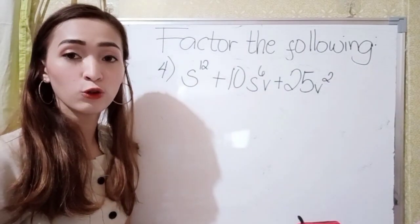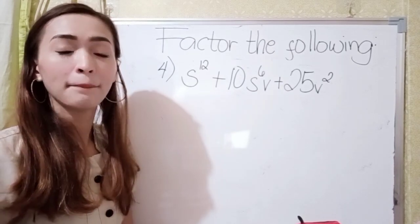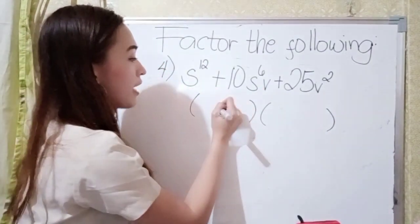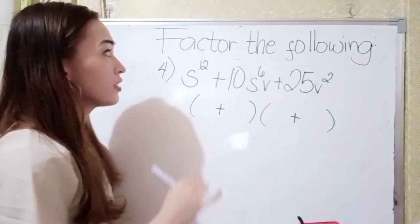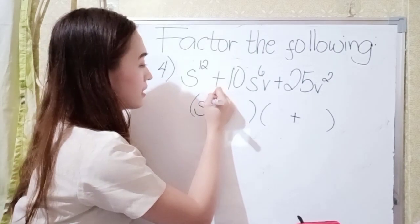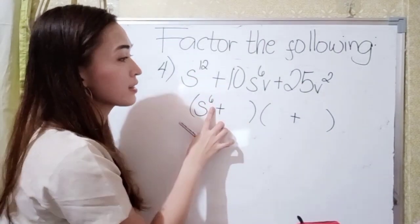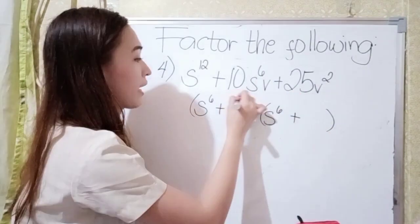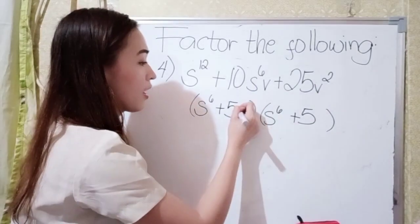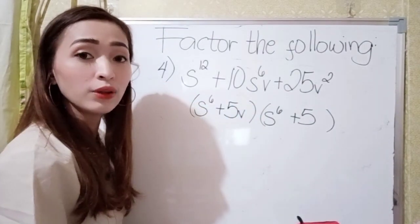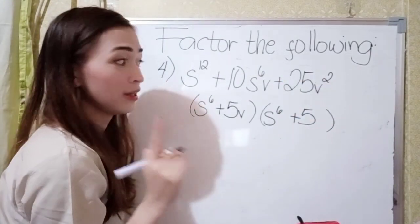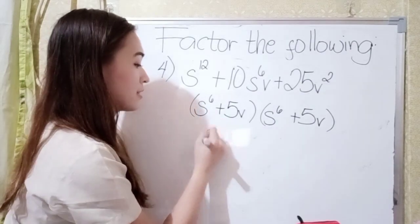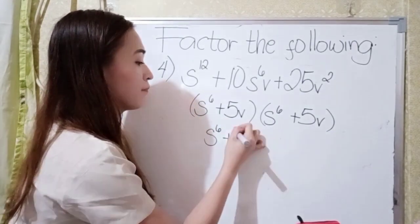For number 4, we have s raised to the 12th power plus 10s to the 6th power times b plus 25b squared. Again, let's have the grouping symbol. Since this is plus, just write plus here and also here. The square root of s raised to the 12th power is s to the 6th, because 12 divided by 2 is 6. So write s to the 6th power here and here. The square root of 25 is 5, so write 5 here. And the square root of b squared — 2 divided by 2 is 1 — so just write b here and also here. The simplified form of our answer is s raised to the 6th power plus 5b, squared. That is our final answer.